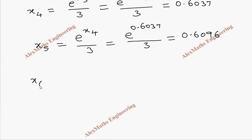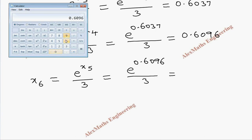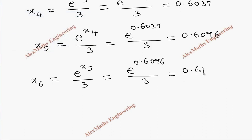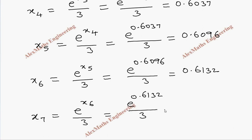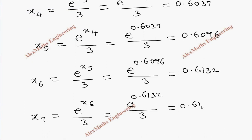Next, x₆ = e^(x₅) / 3 = e^0.6096 / 3. Calculating: 0.6096 → e^x → divide by 3 gives x₆ = 0.6132. Then x₇ = e^0.6132 / 3. Calculating: 0.6132 → e^x → divide by 3 gives 0.6154, so x₇ = 0.6154.